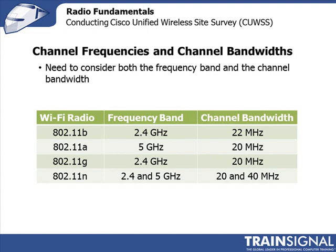802.11 A is the same effective radio as G — it's still an OFDM radio and occupies 20 MHz — but it is deployed in the 5 GHz band. And as we now know, if I'm deployed in a higher frequency, my signal doesn't propagate as far.